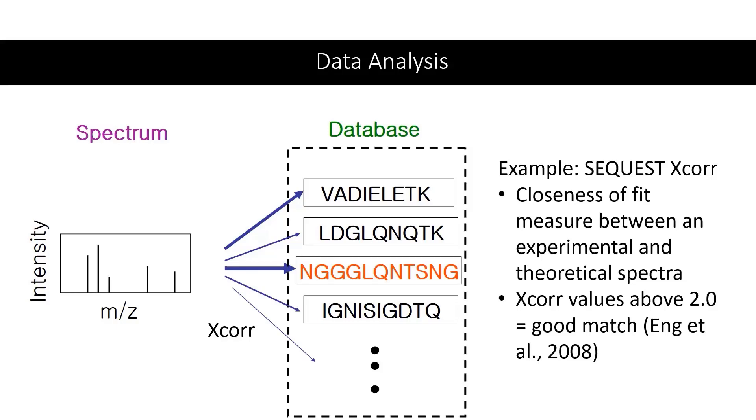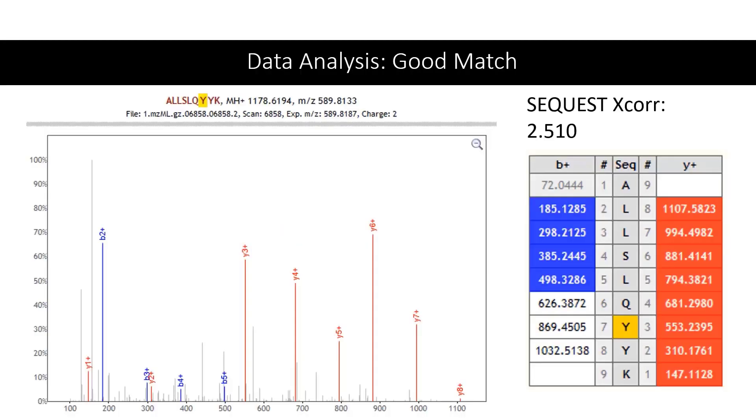To end, let's look at some real-world examples of a good match and a poor match using Sequest. Here, we have an MS-2 spectra. The peaks that have been highlighted in red and blue are the library data that are matched to the observed spectra. The algorithm found that these spectra have a score of 2.510, suggesting that they are a good match and that this is likely the corresponding peptide sequence for this experimental spectra. Another interesting thing to notice is that Sequest also identified that the Y-amino acid in this sequence has been phosphorylated.